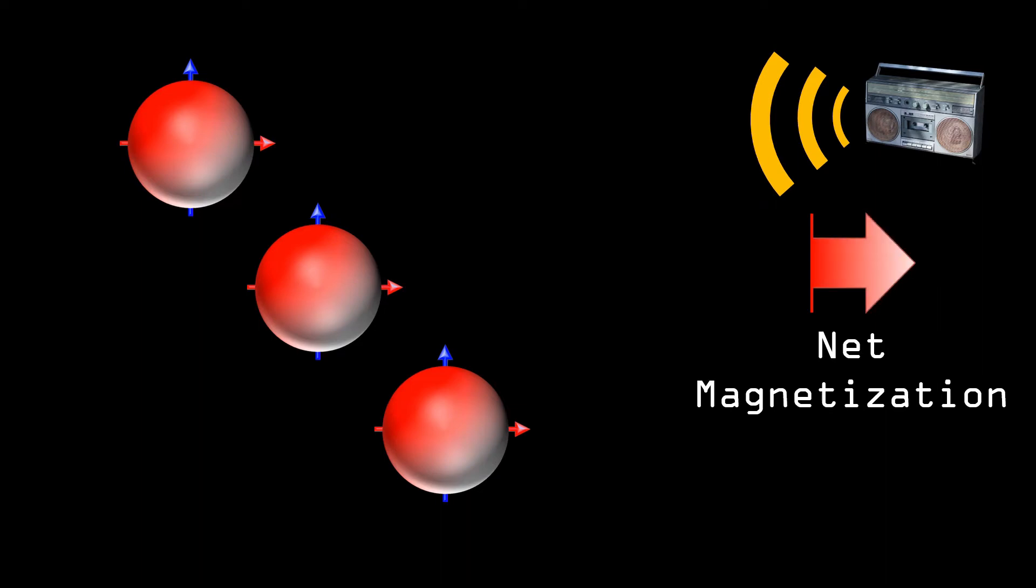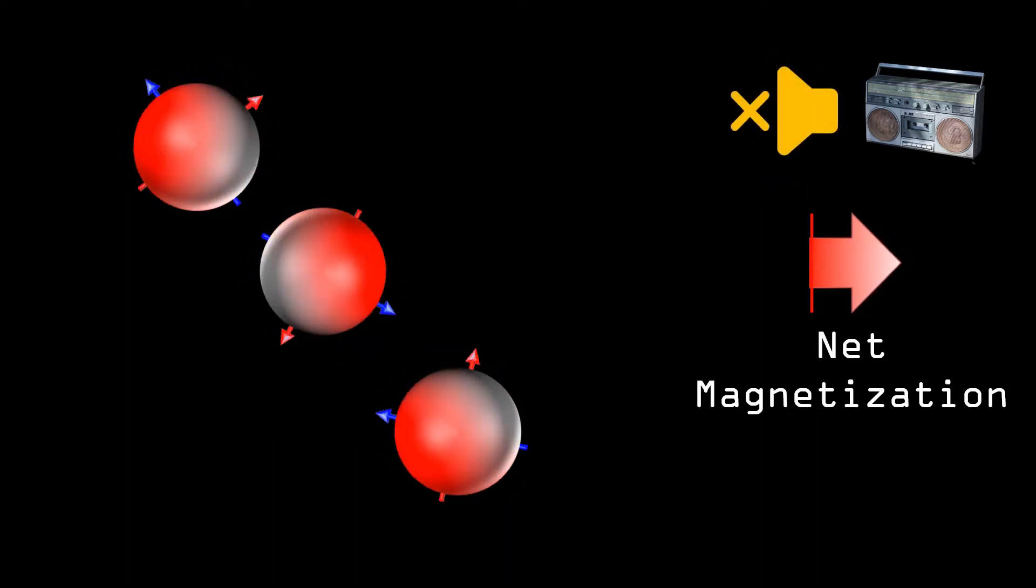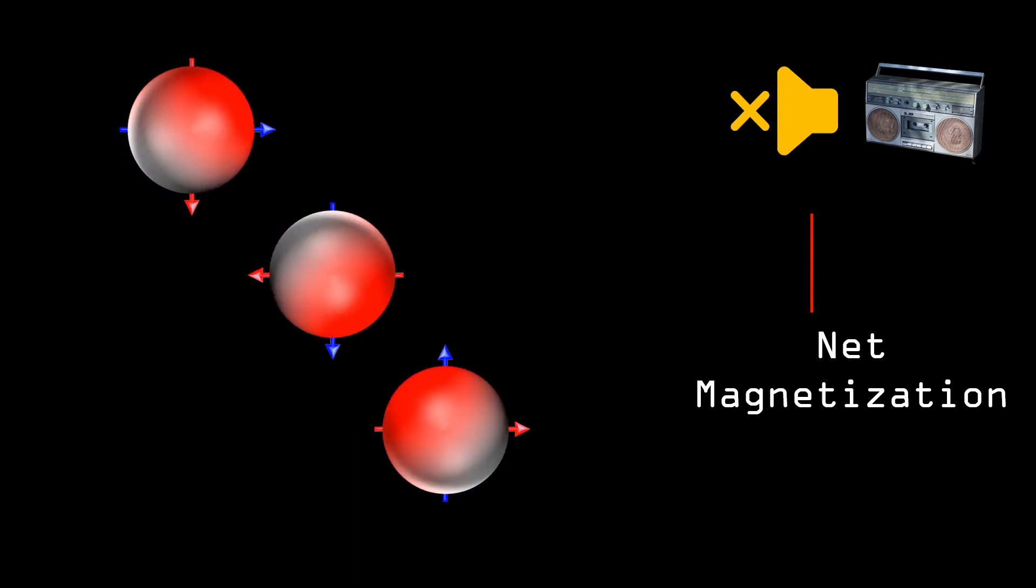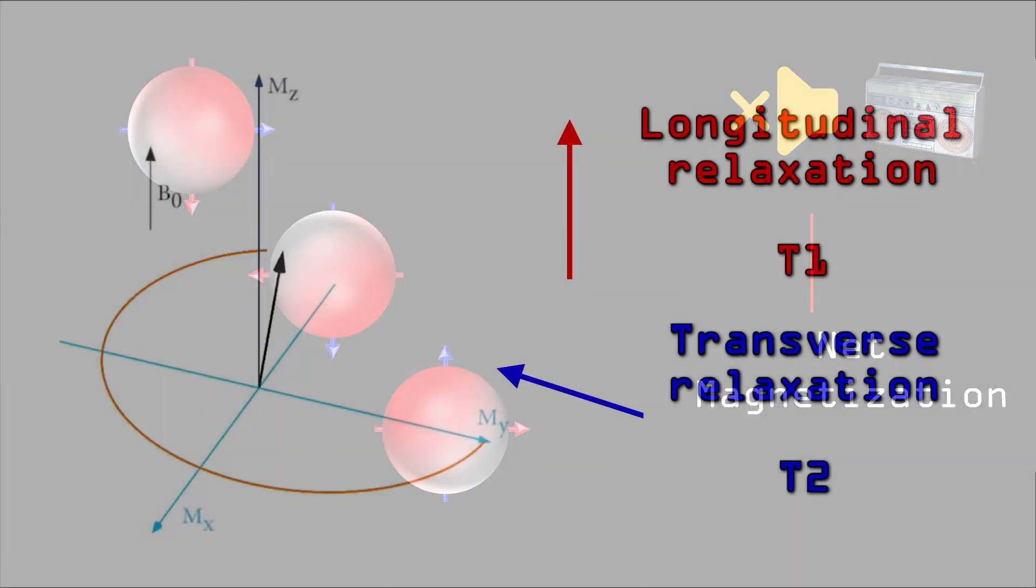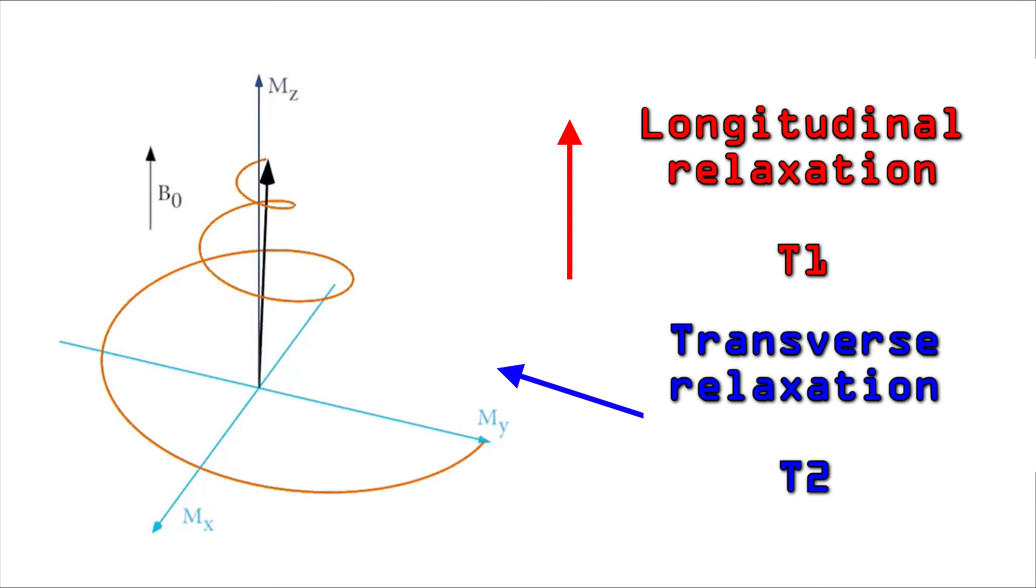After the radio frequency pulse is turned off, the spinning synchrony is lost, meaning that the net transverse magnetization returns to zero. And this process is called transverse relaxation and is abbreviated as T2.